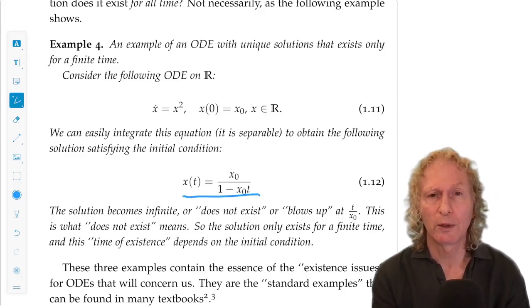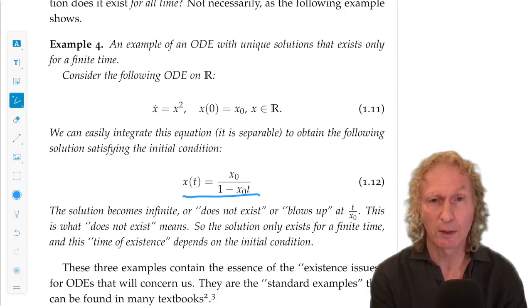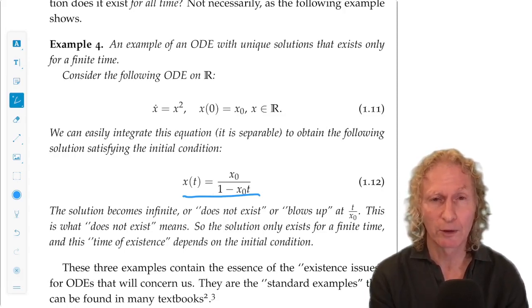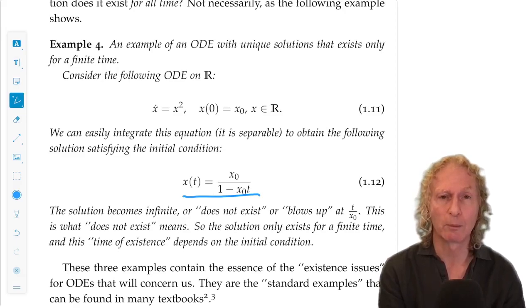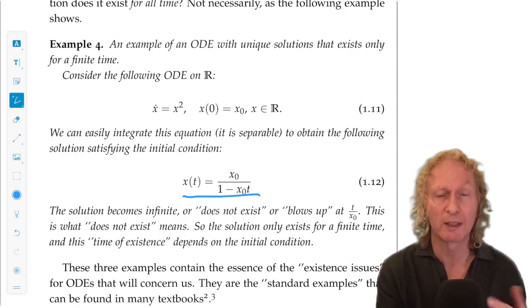And what you see is that it's unique. Given an x naught, we have a unique function satisfying it. But we see from looking at the denominator that at T equal 1 over x naught, the solution is infinite. It blows up. It doesn't exist.